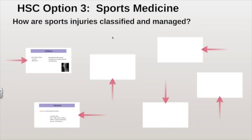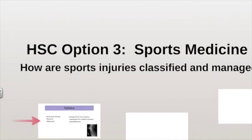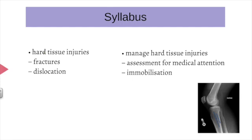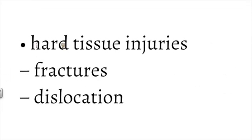This is HSC Option 3. Sports medicine is the topic and the key idea is how a sports injury is classified and managed. The syllabus dot point this video is focusing on is hard tissue injuries — a fairly small dot point with just two dash points: fractures and dislocation.